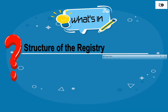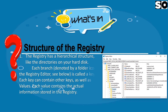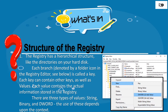The Registry has a hierarchical structure like the directories on your hard disk. Each branch, denoted by a folder icon in the Registry Editor, is called a key. Each key can contain other keys as well as values. Each value contains the actual information stored in the registry. There are three types of values: String, Binary, and DWORD. The use of these depends upon the context.